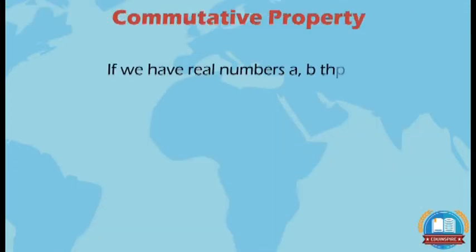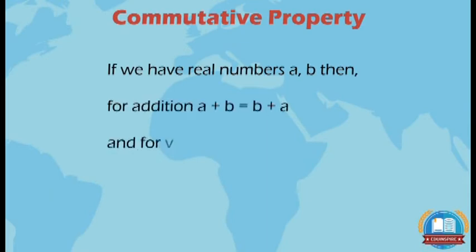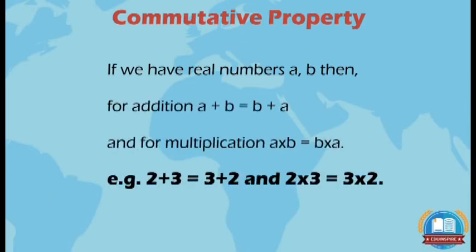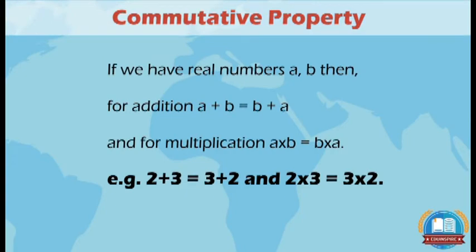First, we will talk about commutative property. If we have real numbers A and B, then for addition, A + B = B + A, and for multiplication, A × B = B × A. Example: 2 + 3 = 3 + 2 and 2 × 3 = 3 × 2.